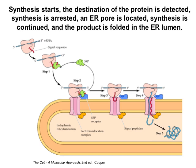That problem is solved by a complicated system: a messenger RNA engages a ribosome and starts to be translated. The very N-terminus of the protein emerges from the ribosome and is recognized by a signal recognition particle — the SRP. It decides whether this protein is going to the ER. If yes, it arrests synthesis. The ribosome is transported to the surface of the ER, a pore is located and engaged, and the SRP says go ahead — continue synthesizing, but push the product down into the ER. The unfolded protein enters the lumen and can be folded there.